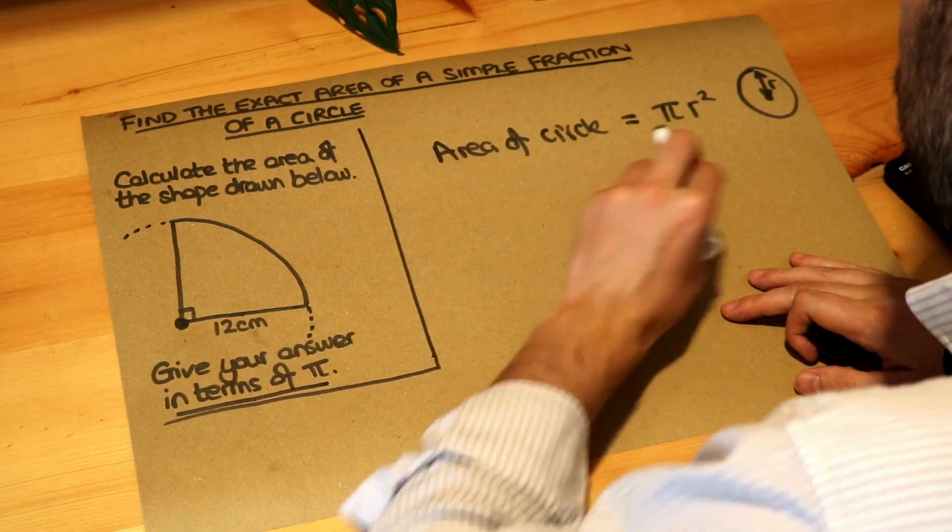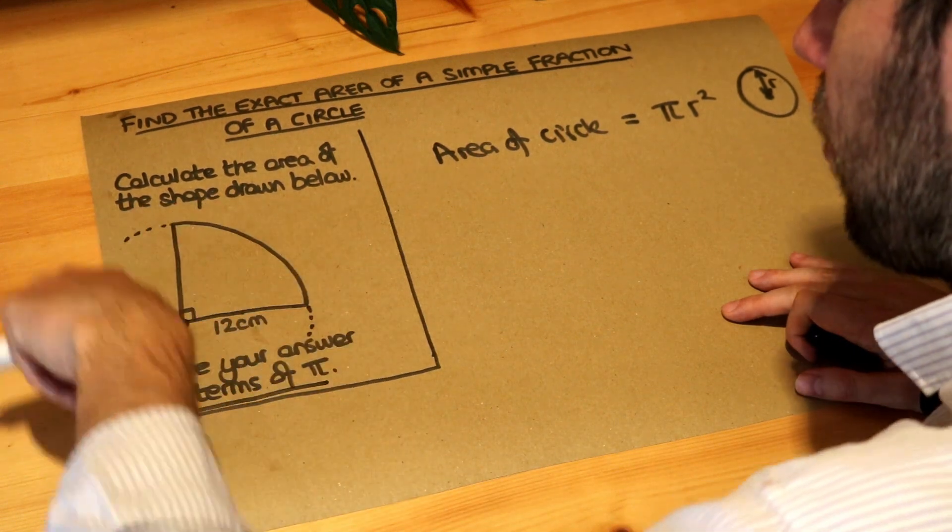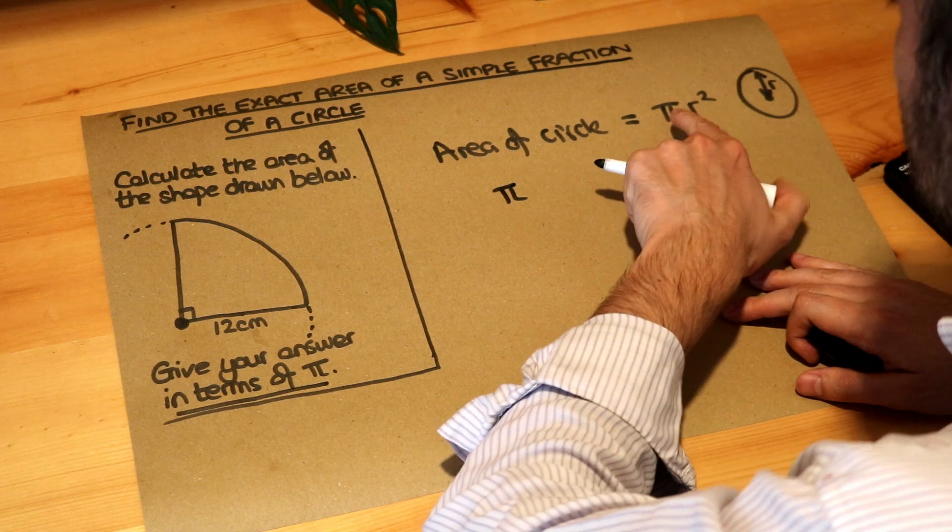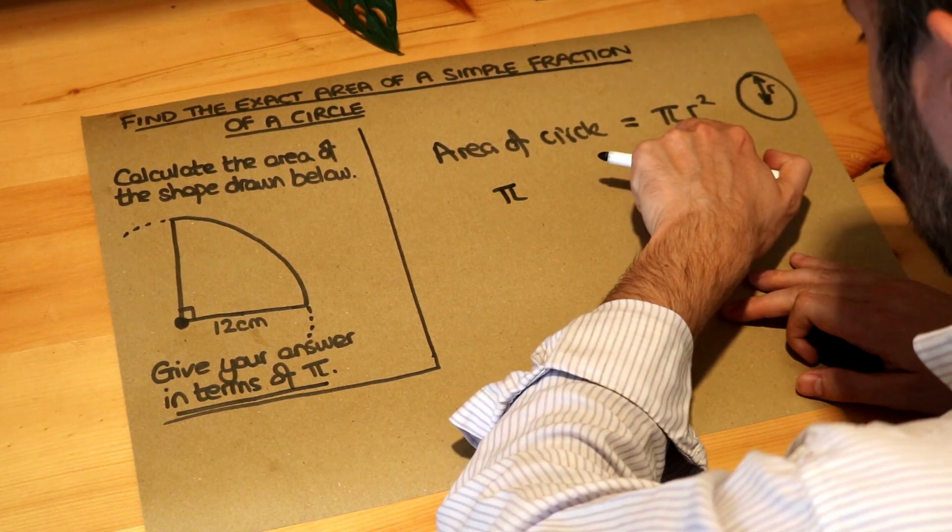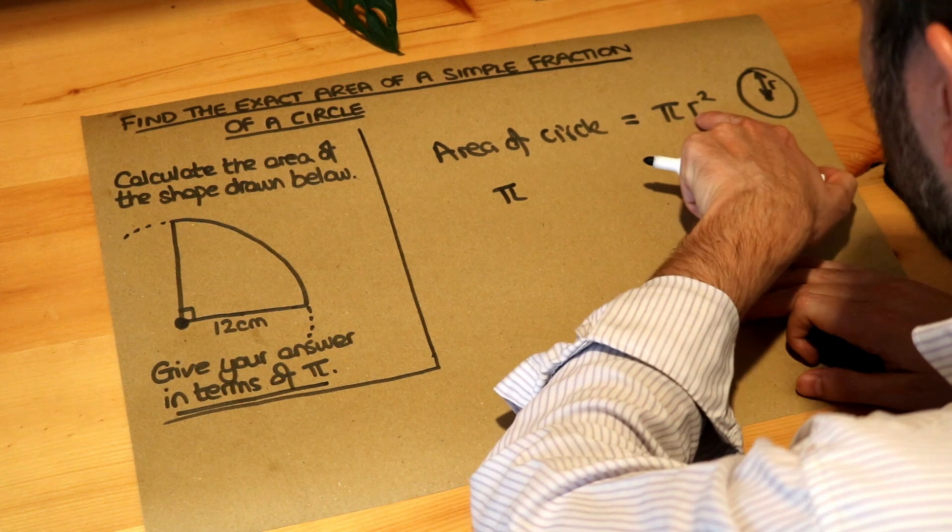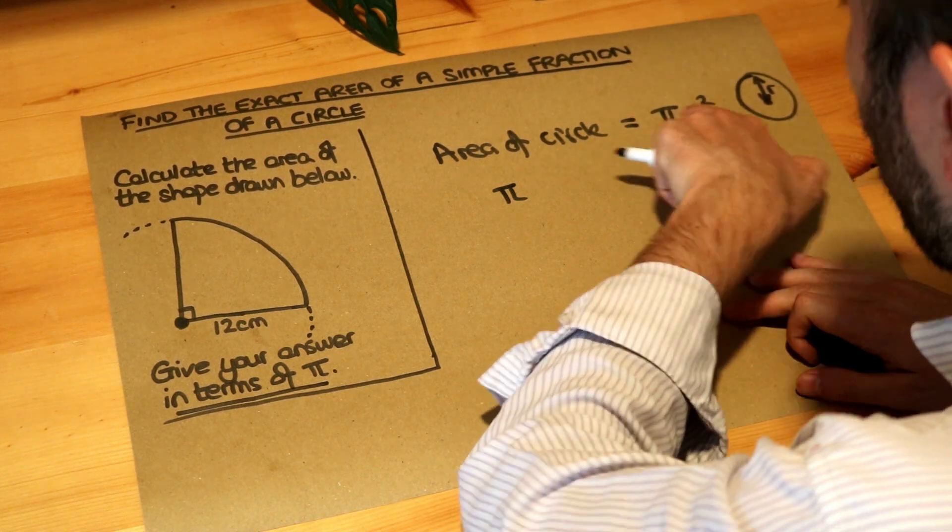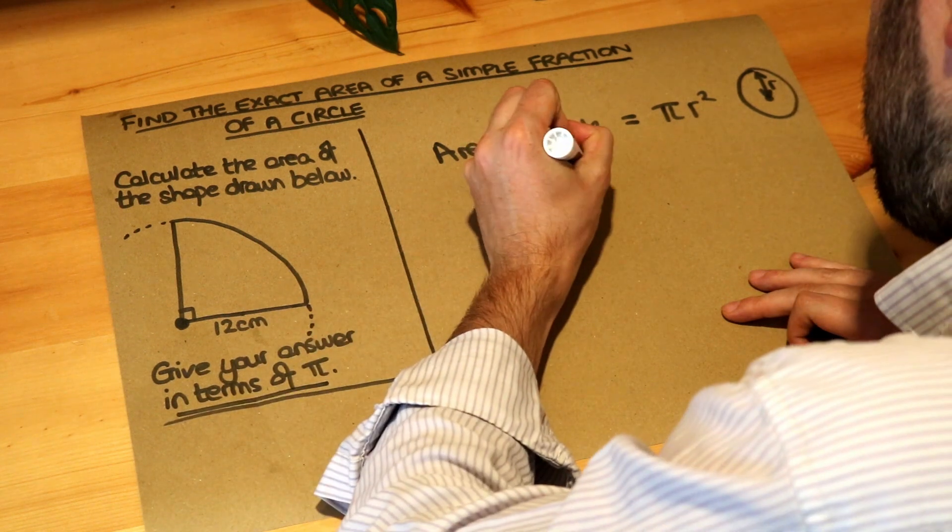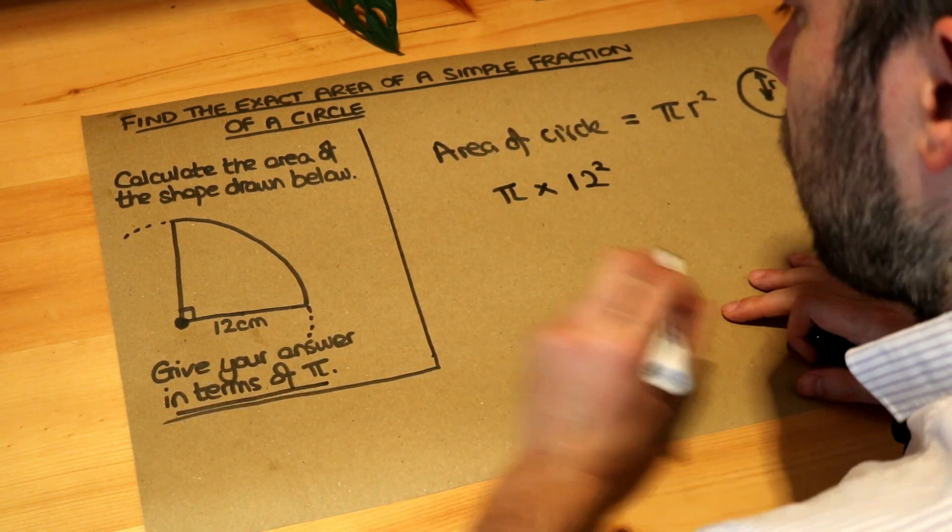So if we wanted the full circle, the area of the whole circle, we would do pi multiplied by - remember in algebra when things are next to each other you times them - so it's pi multiplied by the radius squared. Notice the radius is squared, not all of the pi r. So it's pi times by the radius of 12 squared. So that would be the area of the full circle.